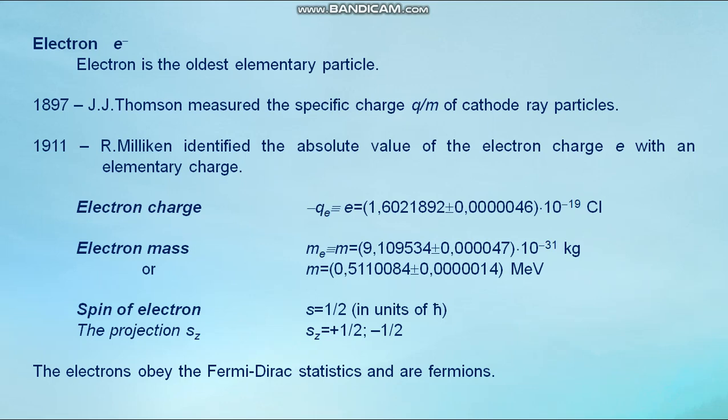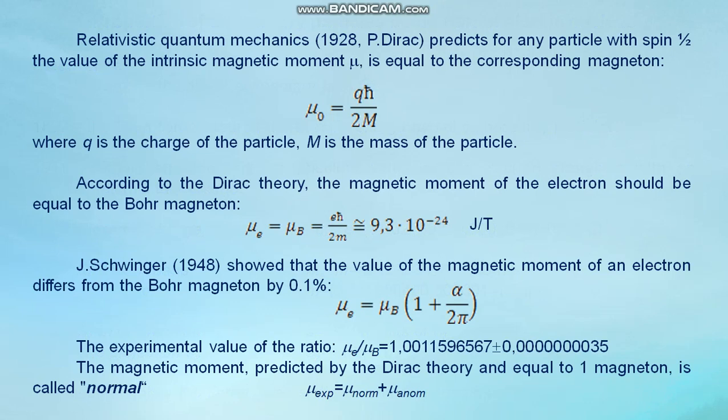The projection Sᴢ equals plus one half or minus one half. The electrons obey the Fermi-Dirac statistics and are fermions. Relativistic quantum mechanics predicts for any particle with spin one half, the value of the intrinsic magnetic moment μ is equal to the corresponding magneton μ₀ equals qℏ/2M, where q is the charge of the particle and M is the mass of the particle.